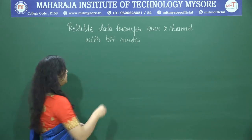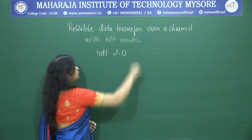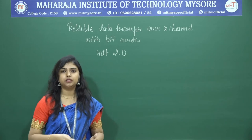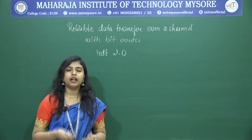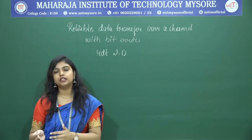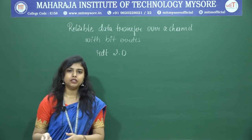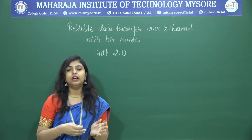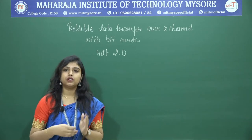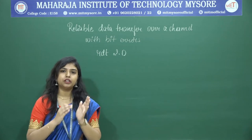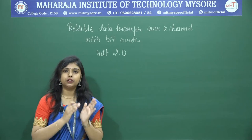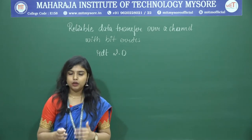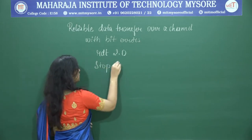Under that we were seeing RDT 2.0. How does RDT 2.0 work? Reliable data transfer 2.0 means: when we send the packet from sender to receiver, if it gets corrupted and the corrupted packet has been received by the receiver, the receiver will send a positive or negative acknowledgement. If a positive acknowledgement is received by the sender, the sender will send the next packet. If a negative acknowledgement is received, the sender will retransmit the packet, thinking the receiver did not receive it correctly.